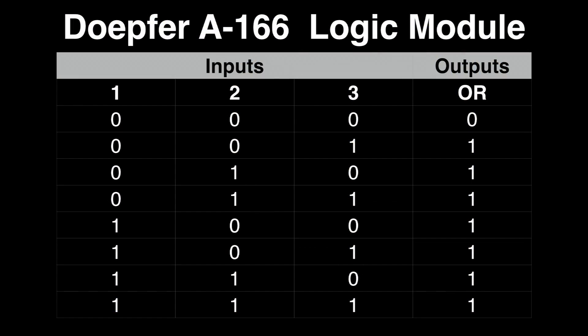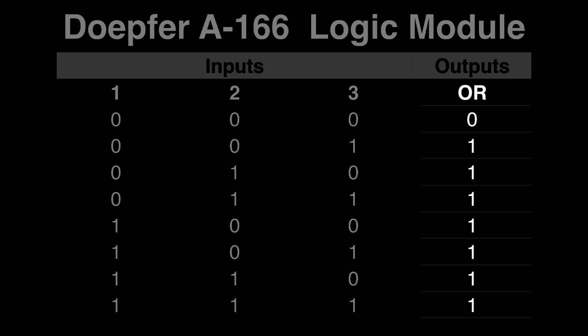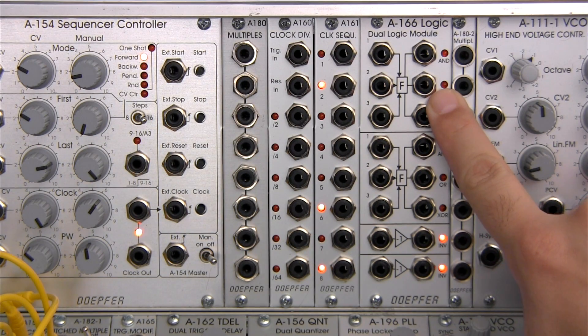Now let's see the OR version of the truth table. You can see right away that if all inputs are low, then your OR output is low. But if inputs one and two are low and three is high, then your output is high. In fact, this pattern continues so that when any input is high, your OR output is high. Again, you'll use your LED on the front panel as your guide.